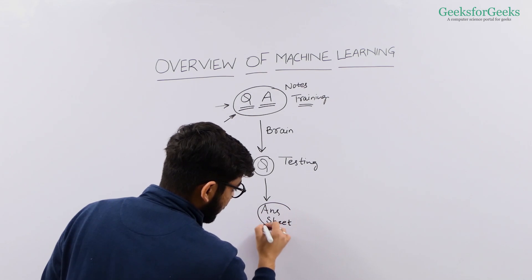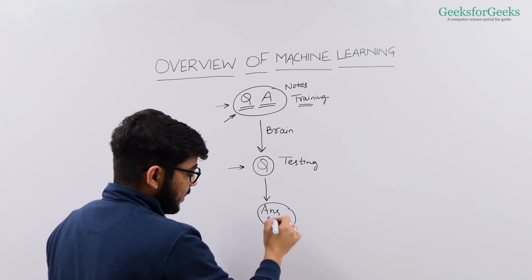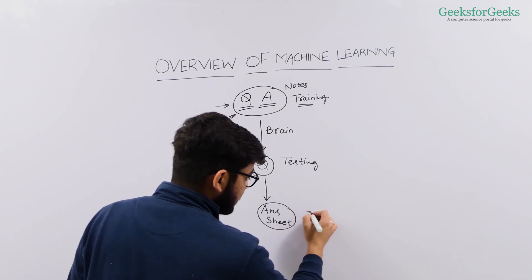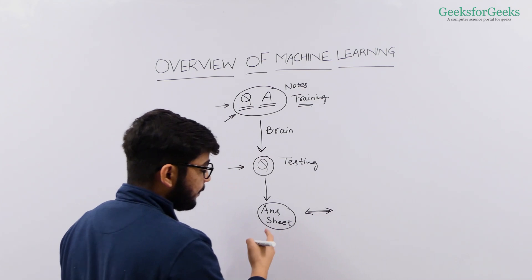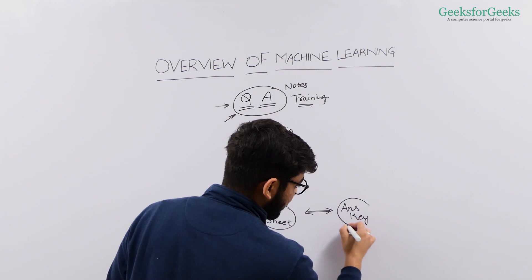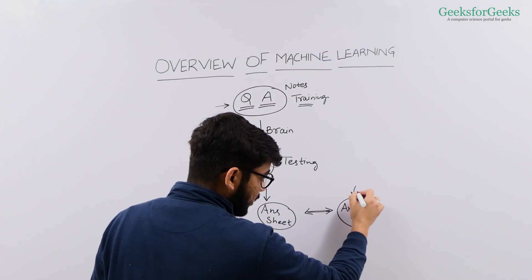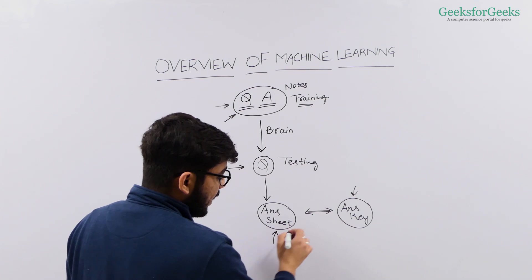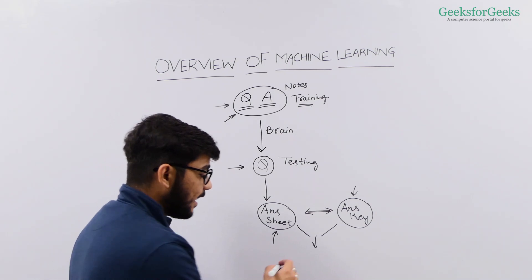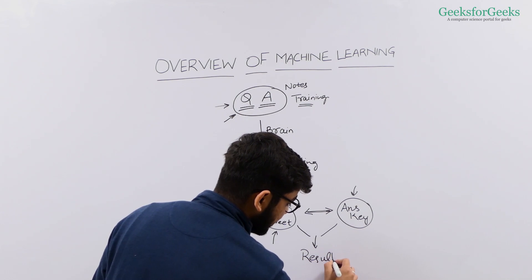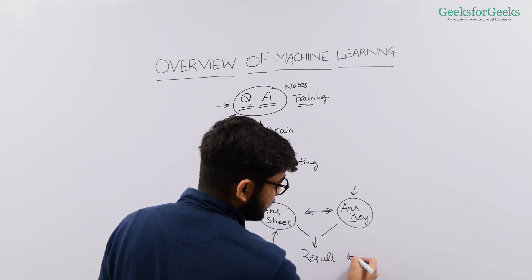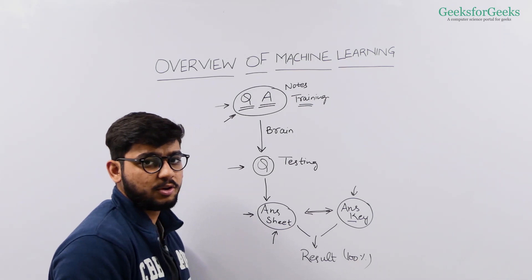Based on the knowledge acquired in training, you answer the questions — this is your answer sheet. After your examination, the examiner takes your answer sheet and compares it with the actual answer key of that question paper. The examiner compares these two things and tells you your result. If you answered all the questions according to the answer key, your score is 100%; otherwise it is calculated as per your performance.